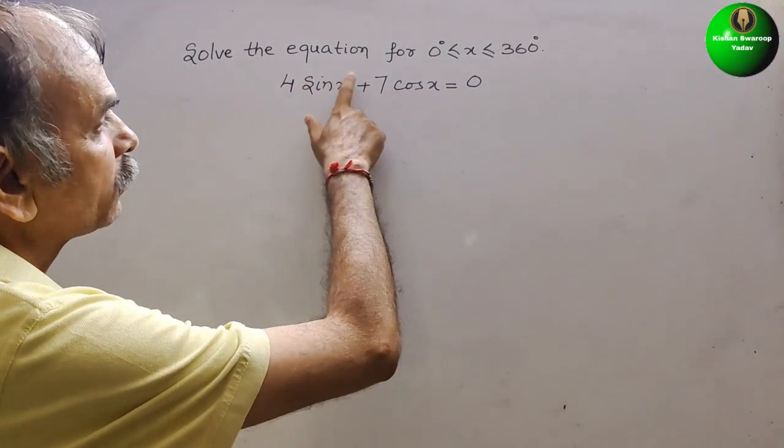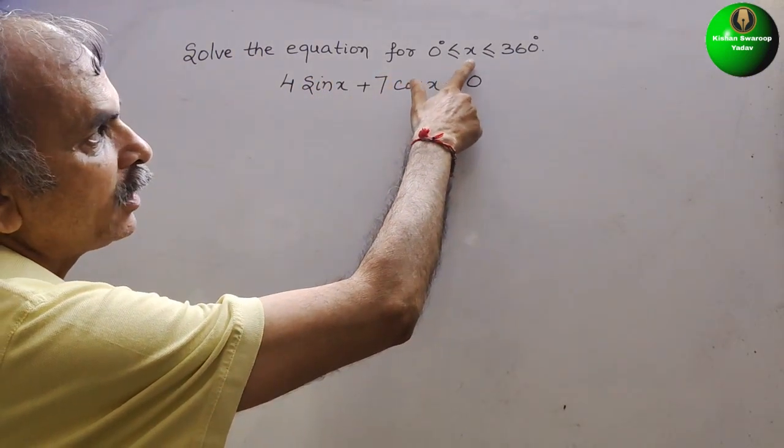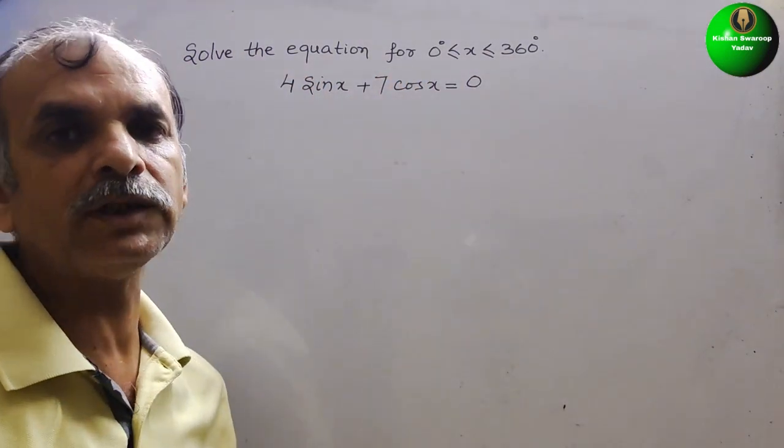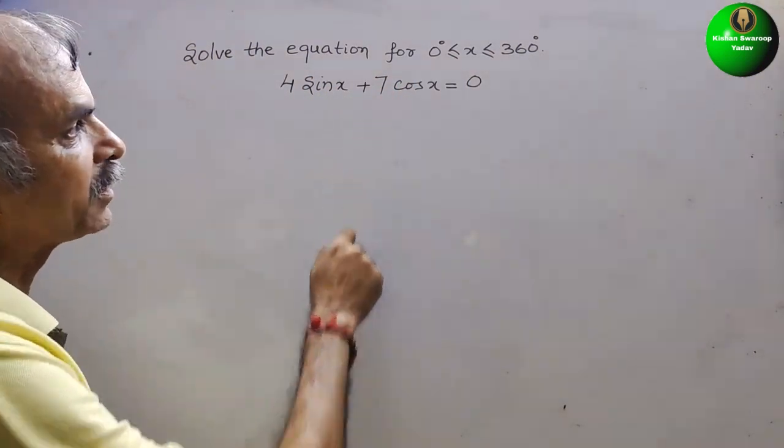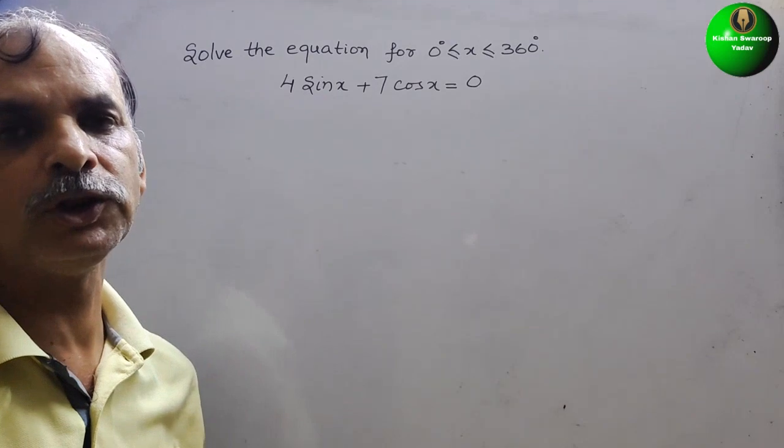Your question is solve the equation for 0 degree less than or equal to x less than or equal to 360 degrees. They have given 4 sin x plus 7 cos x equals 0.